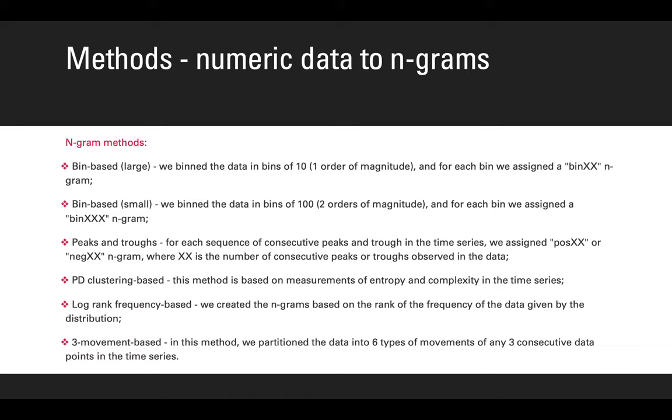The peaks and troughs method: for each sequence of consecutive peaks and troughs in the time series, we assigned a pos-XX character or neg-XX character n-gram, where XXX is basically the number of consecutive peaks or troughs that we observed in the data. The fourth method, PD-clustering-based, is based on measurements of entropy and complexity in the time series that has been previously published in the literature.